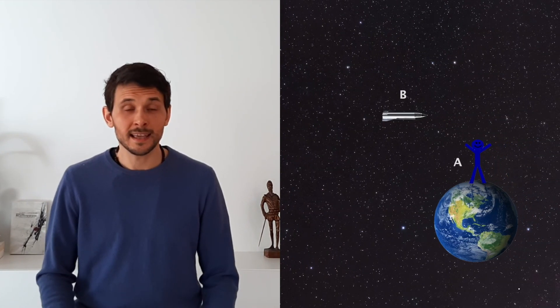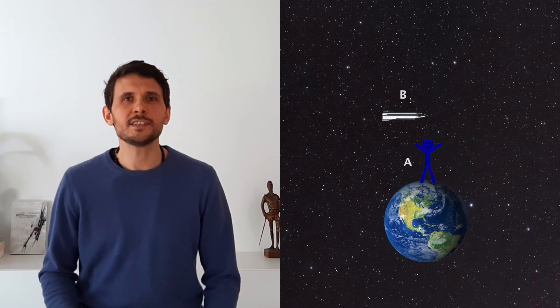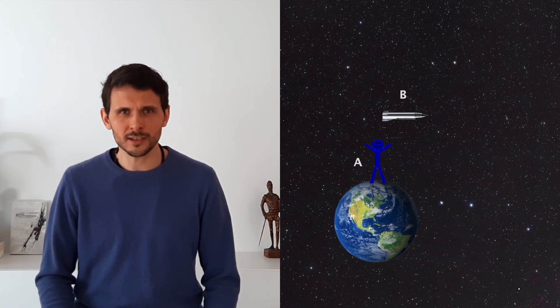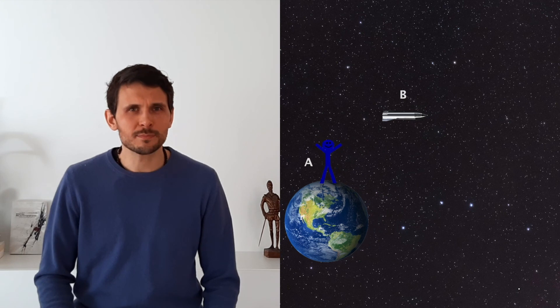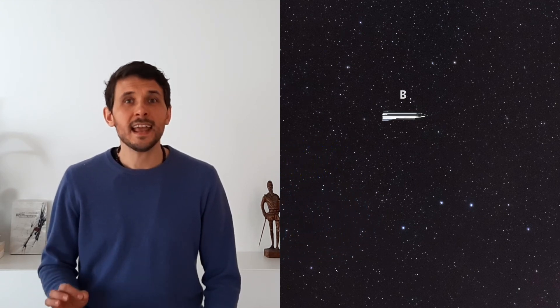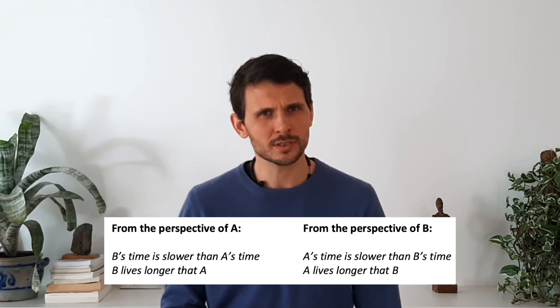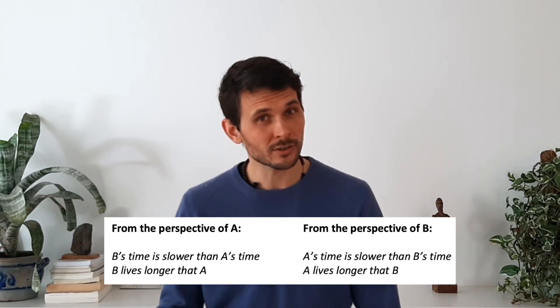If we jump to the perspective of observer B, his starship is at rest and it is Earth that moves by at high velocity. So from this perspective, it is A that is in motion and B will conclude that A has the slower clock. So if you ask A, he will say that B is the one with the slower clock and that he will live longer.